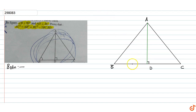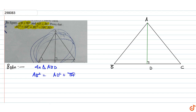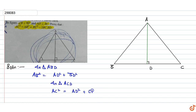It is given that AD is perpendicular to BC. By Pythagoras theorem in triangle ABD, AB square is equal to AD square plus BD square. And by Pythagoras theorem in triangle ACD, AC square is equal to AD square plus CD square.